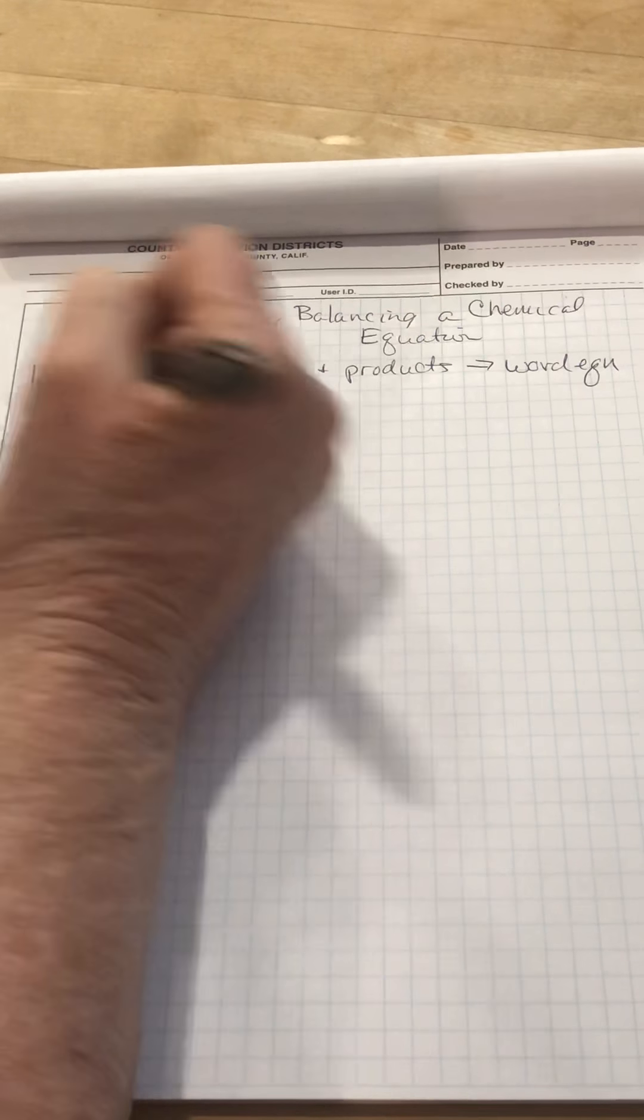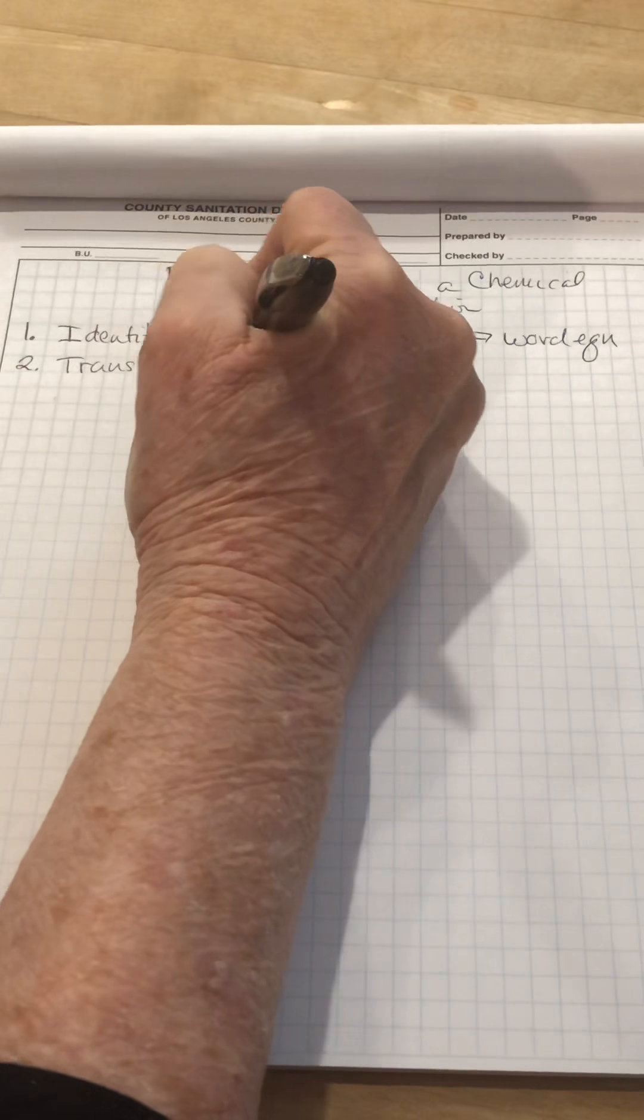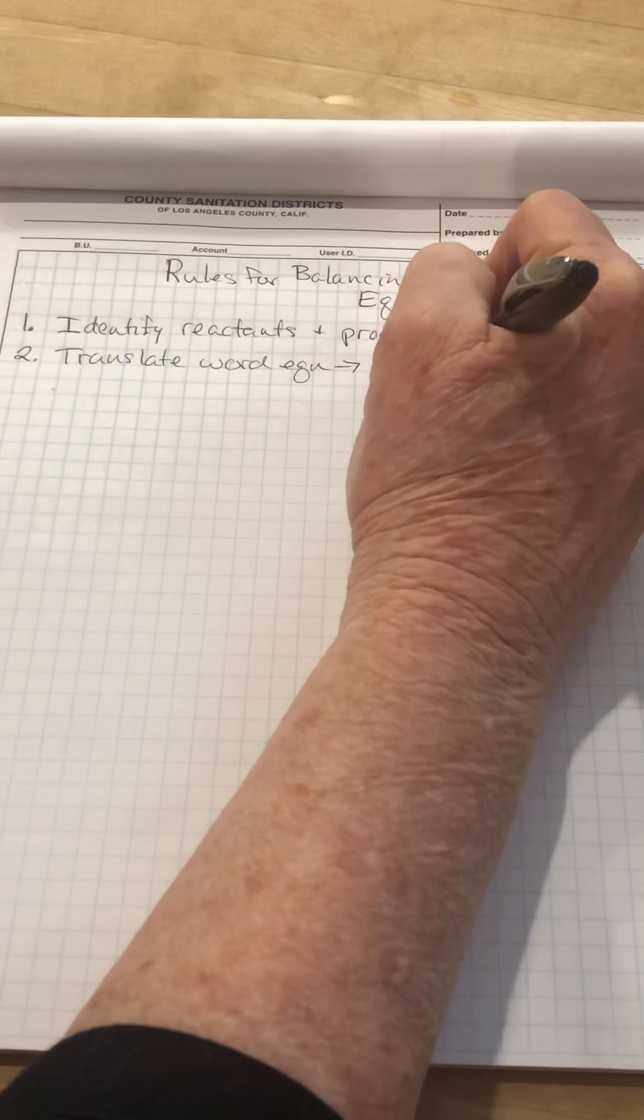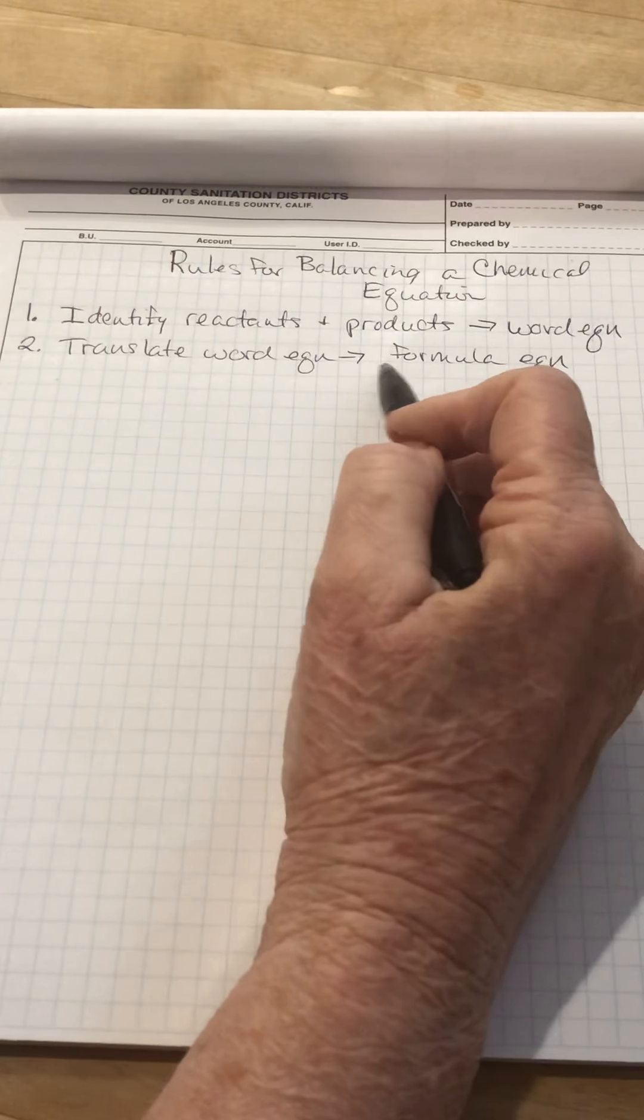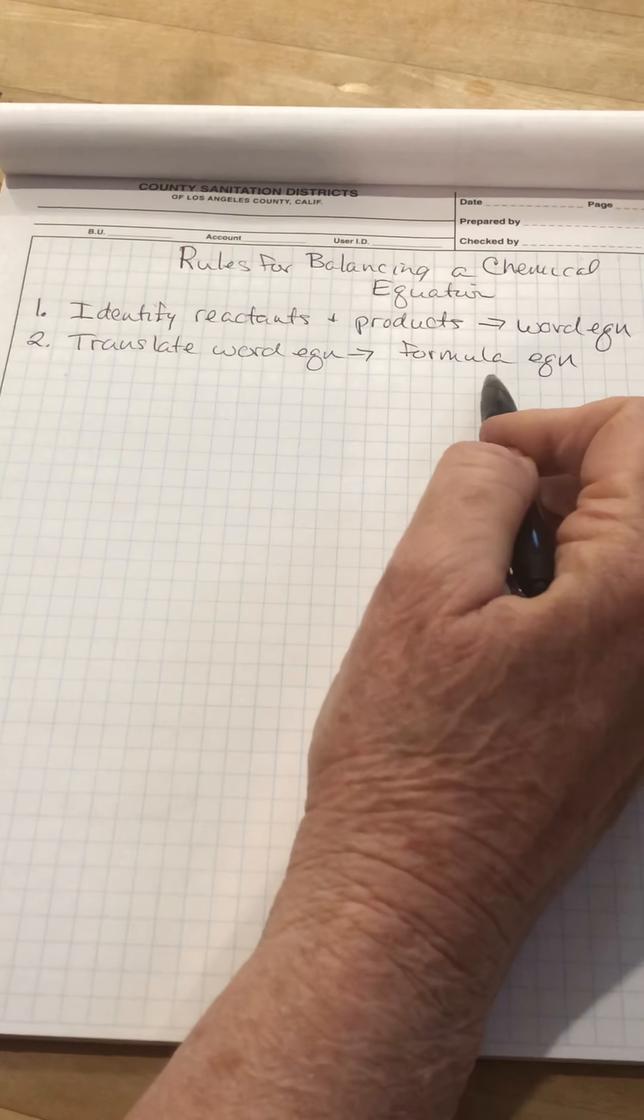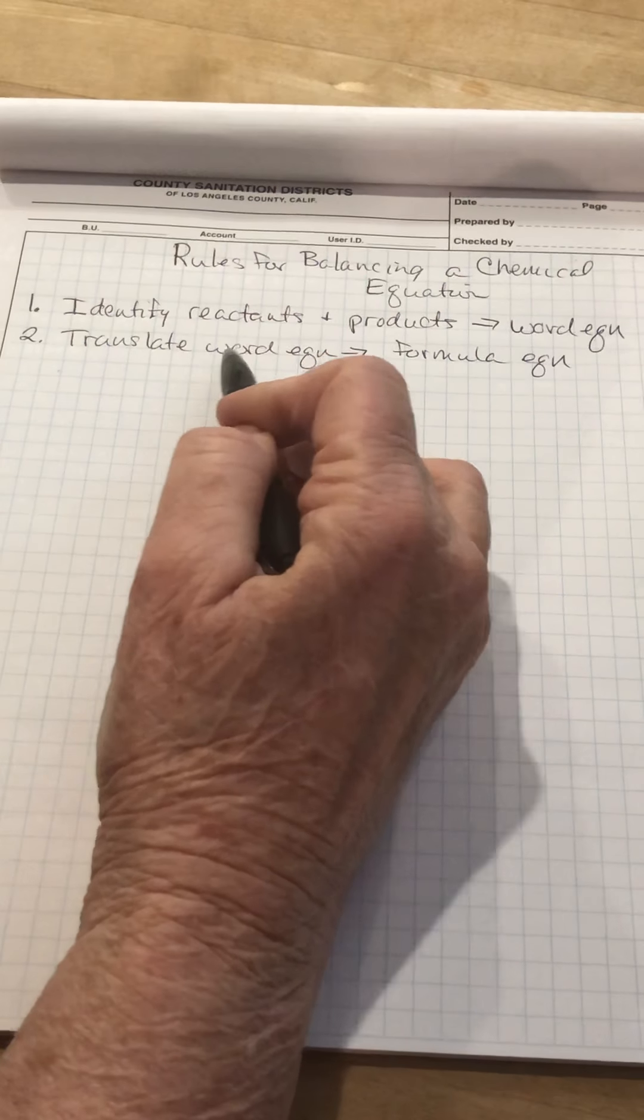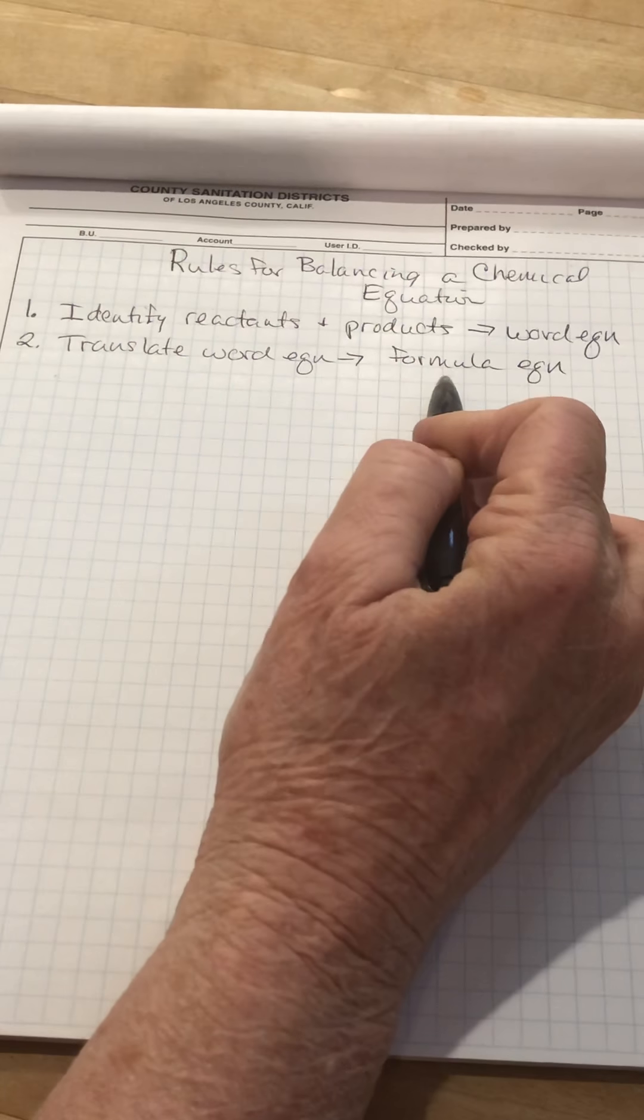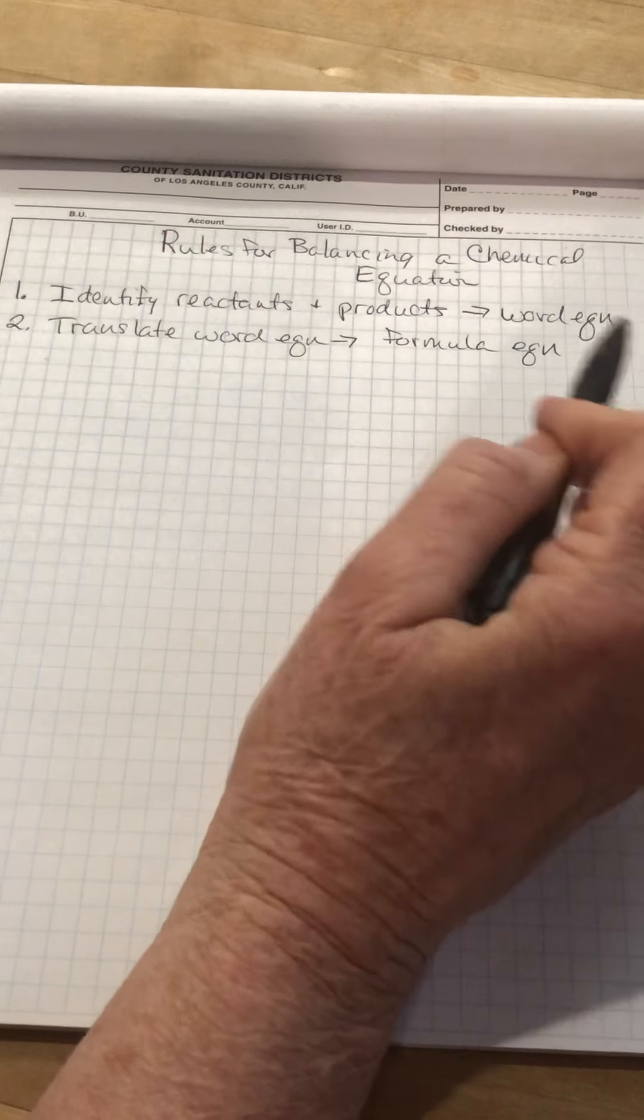The second thing you're going to have to do is translate a word equation to a formula equation. Lots of times in class we'll just start with a formula equation. As we talked about earlier, formula equations give you a lot more information and you can work with them easily. But in your homework on the test, occasionally on a worksheet, you're going to get a word equation, you're going to have to use your nomenclature skills, and you're going to have to translate this to a formula equation. If you make a mistake going from here to here and you get the wrong formulas, things go bad quickly.